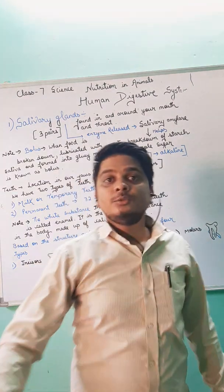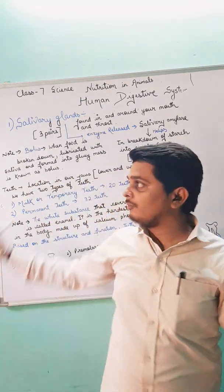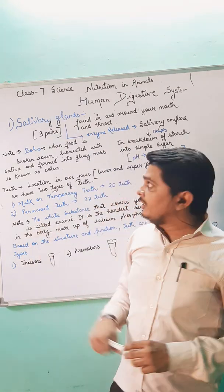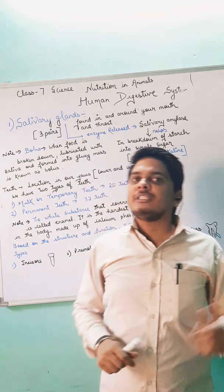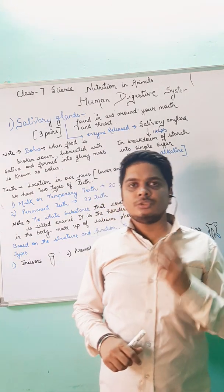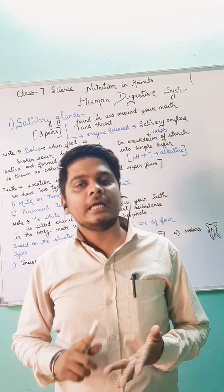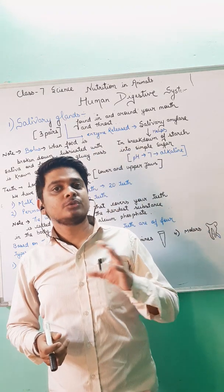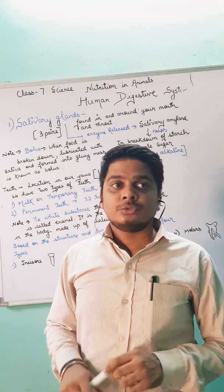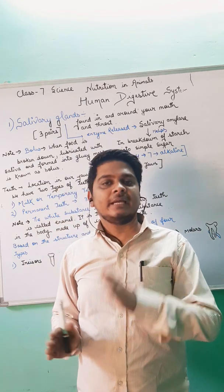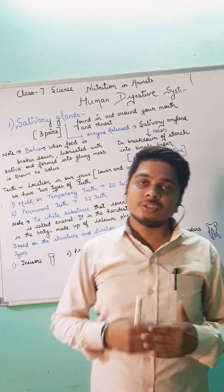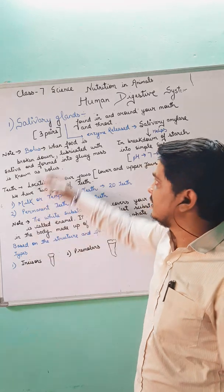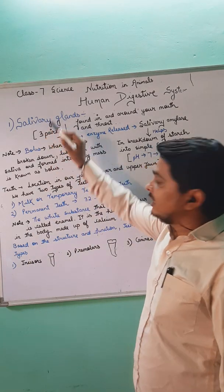Good morning students. Today's topic for discussion is salivary gland and teeth. Previously I told you that the mouth consists of three parts: tongue, teeth, and salivary gland. We discussed two types of processes — mechanical and chemical. Today I am going to discuss how the mouth helps in the chemical process.